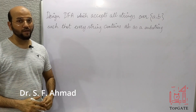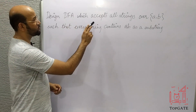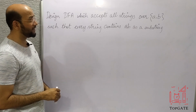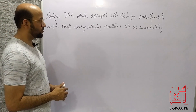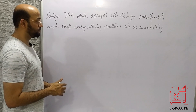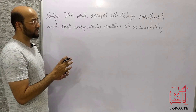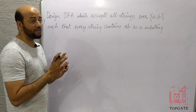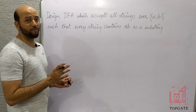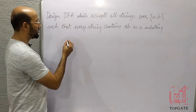Hello students, welcome to the channel Top Gate. In this video I'll discuss one more problem of DFA — to design a DFA which accepts all strings over the alphabet {a, b} such that every string contains 'AB' as a substring. Let's first understand what kind of language this is and what is the shortest possible string in this case.